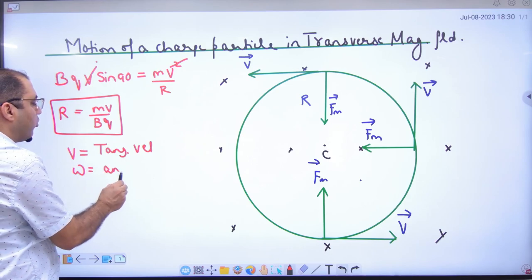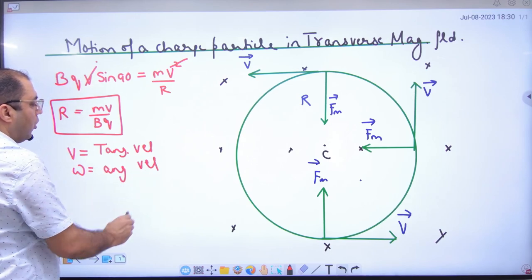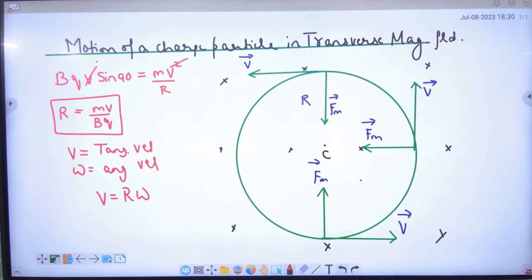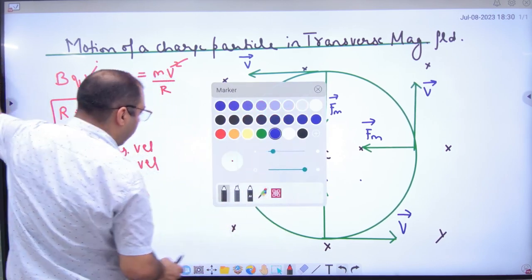What do we say? Angular velocity. And circular motion is very important. V is equal to R times omega. So V is equal to R omega.